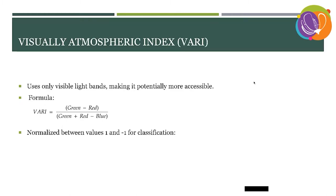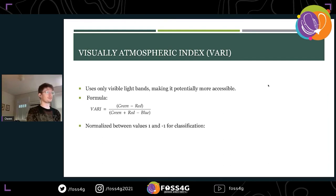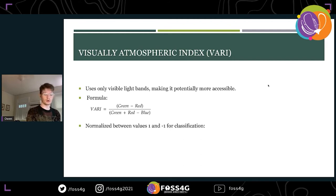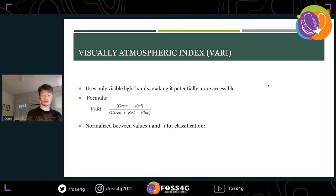The Visible Atmospherically Resistant Index uses only visible light bands, making it potentially more accessible in areas without an NIR product at high resolution. The blue band is incorporated into both indices as a proxy for the removal of atmospheric effects without higher-level processing. We also normalized the VARI between values of negative one and one for classification.